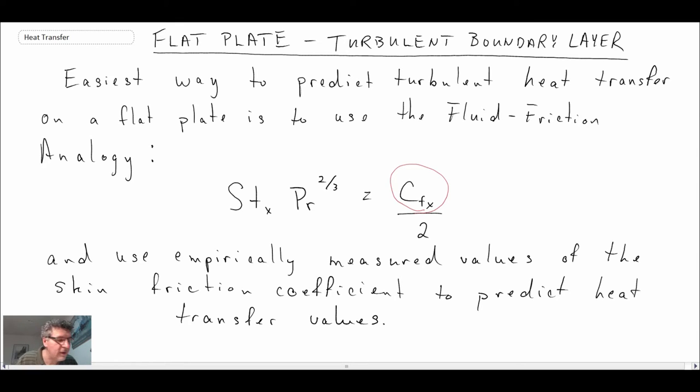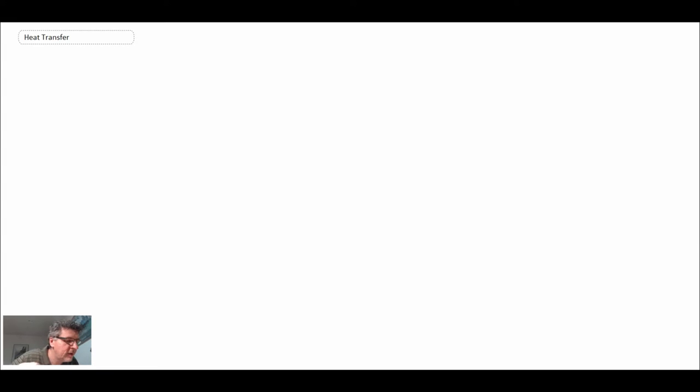Okay, so what we're going to do, let's take a look at using the Colburn analogy for a turbulent boundary layer on a flat plate. And this will be the case of an isothermal flat plate.